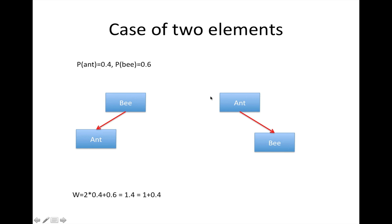What is the expected search time in each case? When bee is at the root, for finding ant we need two comparisons, so that's 2 times 0.4, plus 0.6 for bee, which needs just 1. The total is 1.4.